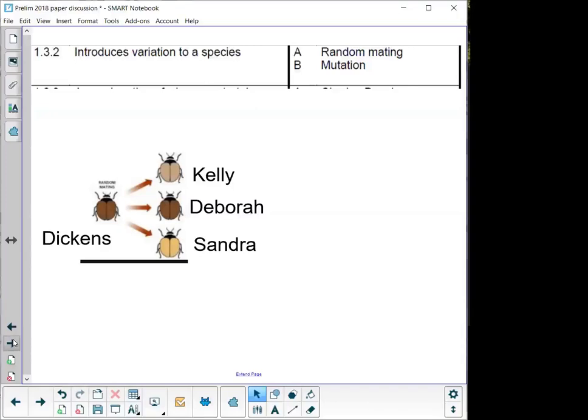So 1.3.2 introduces variation to a species and I say to you the two options there is random mating and mutation. So both of these are going to lead to variation in a species. Mutations lead to variation and random mating leads to variation.